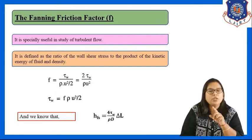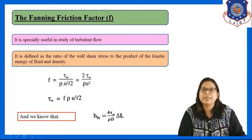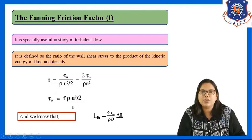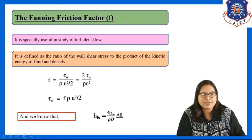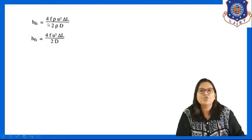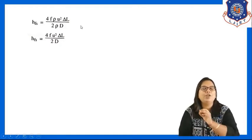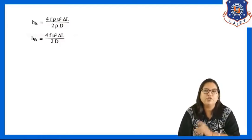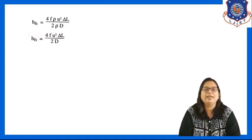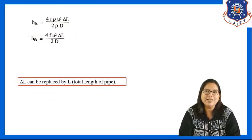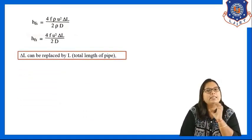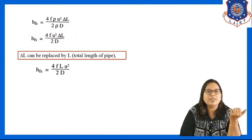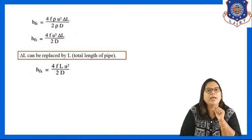Substituting tau_w into the Hfs equation: Hfs = 4f * rho * u² * delta l / (2 * rho * d). Simplifying — rho cancels — giving Hfs = 4f * u² * delta l / (2d). Replacing delta l with the total length l, Hfs = 4f * l * u² / (2d).